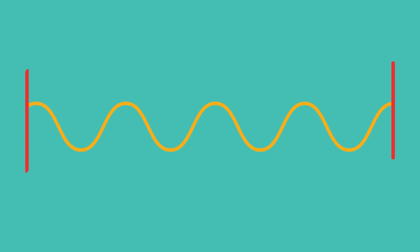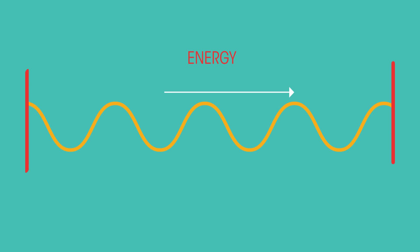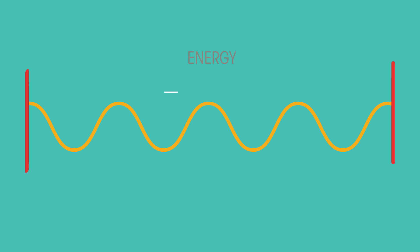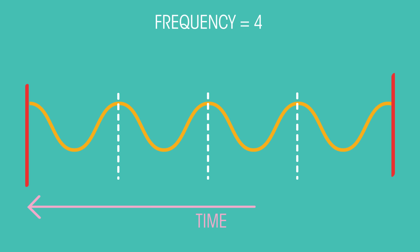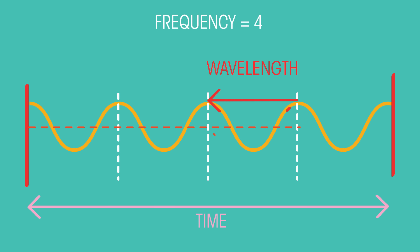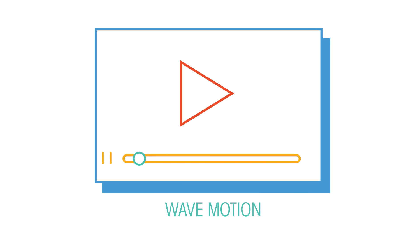Waves transfer energy from one place to another. You should already know how to describe them in terms of frequency, wavelength and amplitude, which we looked at in another video. In this video, we're going to look at two ways they can be classified.